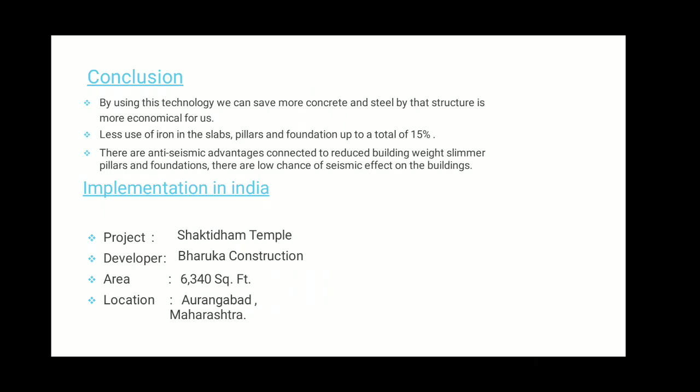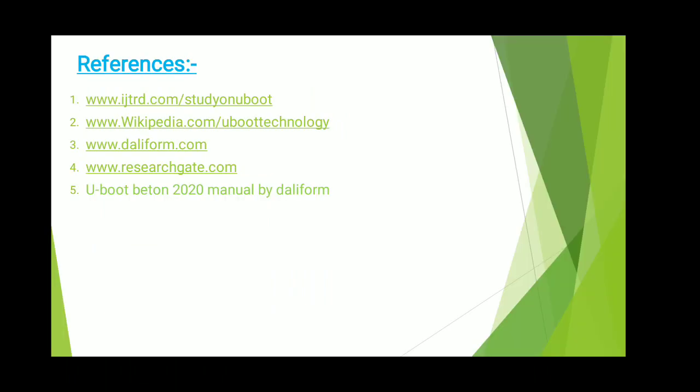In conclusion, by using this technology we can save more concrete and steel, making the structure more economical, with less use of iron, new slab pillar and foundation savings of up to 15 percent total. There are anti-seismic advantages connected to reduced building weight, with lower chances of seismic effect on buildings. In India, it was recently implemented in the Shaktidham Temple construction by Baruka Construction, covering 60,340 square feet in Aurangabad, Maharashtra. References include IJTRD website, Wikipedia, Daily Form, ResearchGate, and the U-Boot Manual 2020. Thank you.